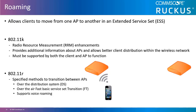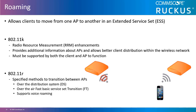Roaming is when a client station disassociates from one AP and reassociates with another access point that is part of the same extended service set. The goal of roaming is to allow the device to move its association from one AP to another without breaking higher-level connections and requiring the device to re-authenticate. Client stations determine when and how, or even if, they roam.